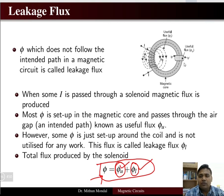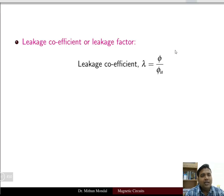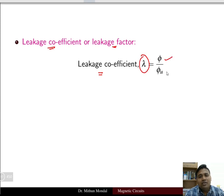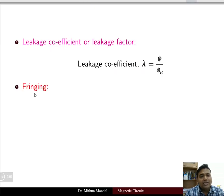One more thing to note is that when there is useful flux, some bulging out of the flux occurs — we will see that a little later. One term we need to know is the leakage coefficient or leakage factor. The leakage coefficient, denoted by lambda, is basically the total flux phi divided by the useful flux. That ratio is known as the leakage coefficient. Now, what is fringing?